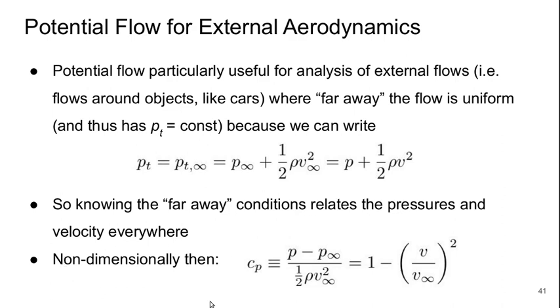If we want to write this non-dimensionally, we can write this in terms of a static pressure coefficient, which is defined to be p minus p infinity over one-half rho v infinity squared. Using the above equation, we can write this for potential flow only purely in terms of the velocity field. So the pressure coefficient is one minus v over v infinity squared.